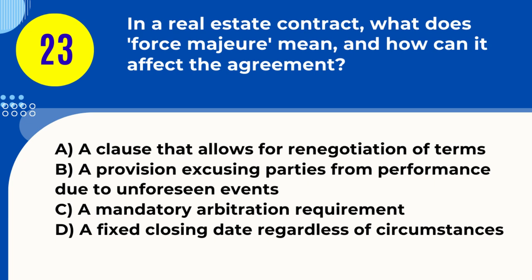Question 23. In a real estate contract, what does force majeure mean and how can it affect the agreement? A. A clause that allows for renegotiation of terms B. A provision excusing parties from performance due to unforeseen events C. A mandatory arbitration requirement D. A fixed closing date regardless of circumstances. Answer: B. A provision excusing parties from performance due to unforeseen events. Explanation: Force majeure refers to a clause in real estate contracts that can excuse parties from fulfilling their obligations due to events beyond their control.